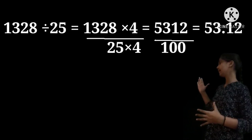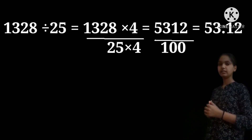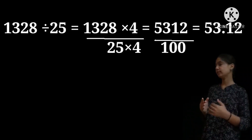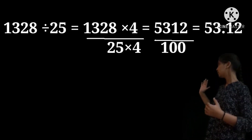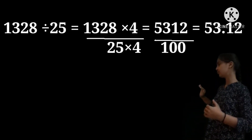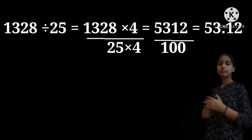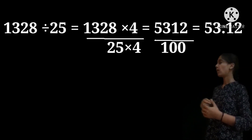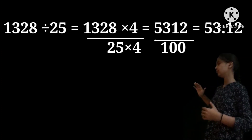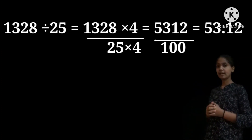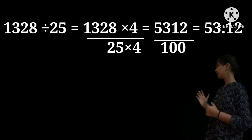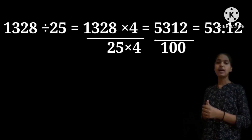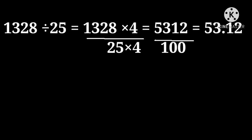Let us see another example: 1,328 divided by 25. We should multiply 4 to the numerator and denominator. So 1,328 into 4, divided by 25 into 4. Let us multiply: 1,328 into 4 is 5,312, and 25 into 4 is 100. Let us divide this. The answer is 53.12.